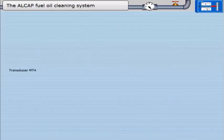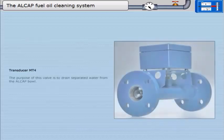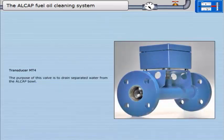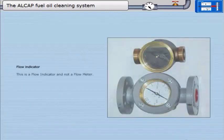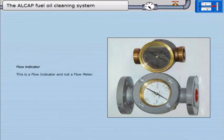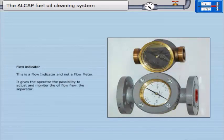Transducer MT4. The purpose of this valve is to drain separated water from the ALCAP bowl. Flow indicator. This is a flow indicator and not a flow meter. It gives the operator the possibility to adjust and monitor the oil flow from the separator.